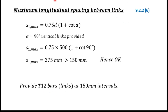Finally, check the maximum allowable spacing. From the Eurocode clause: S1,max = 0.75d × (1 + cot α), where α = 90° for vertical stirrups. So S1,max = 0.75 × 500 × (1 + cot 90°) = 375 mm. Our chosen spacing of 150 mm is less than 375 mm, so it is acceptable. Therefore, provide T12 bars at 150 mm intervals. That is how we perform shear reinforcement design for a concrete beam according to the Eurocode.